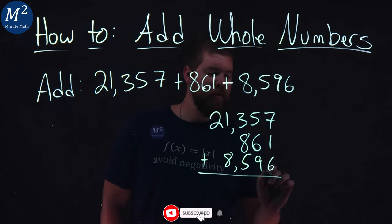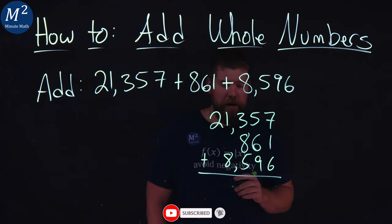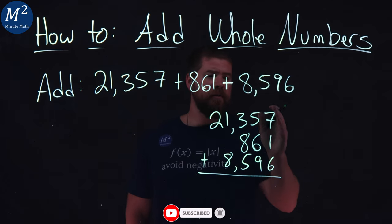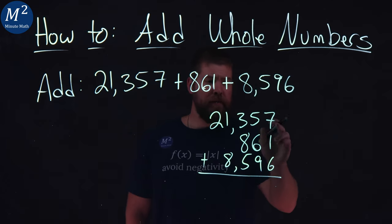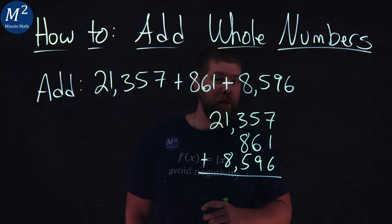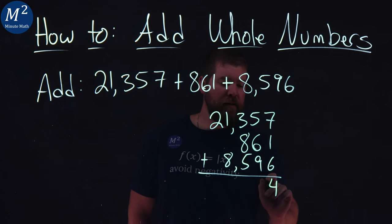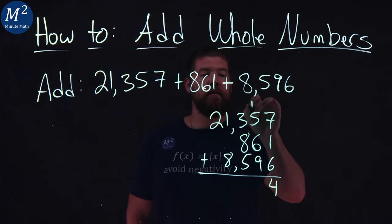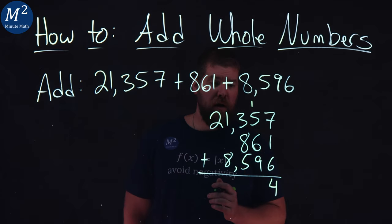Then we're going to add them together. So now what I want to do is go vertically here. 7 plus 1 gives me 8, plus 6 gives me 14. 4 goes down here, 1 goes into the 10's column.